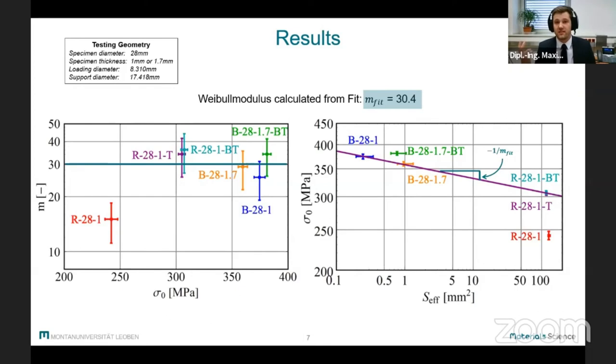But there were two data sets that were not taken into account for the fit. The first one is a Ball-on-Ball set that was tested with a compliant layer and which shows quite a high strength compared to other Ball-on-Three-Balls samples. The other one is a Ring-on-Ring sample that was tested without any layers, which is both lacking in strength and Weibull modulus.